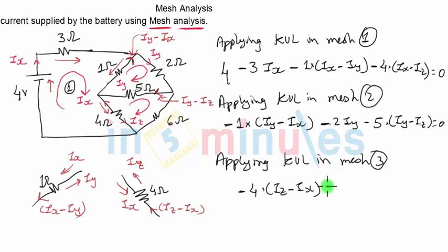Next will be drop across 5 ohm which will be minus 5 times (IZ minus IY), this time because the second current is IY. And finally it will be minus 6. The only current through 6 ohm resistance is IZ, so minus 6IZ equals zero.